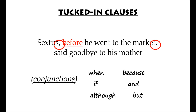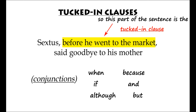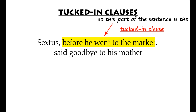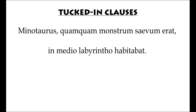This is what you do with the tucked-in clause. They generally have a comma around them, but they might not have, but they always start with a conjunction. A conjunction is a joining word — they join two bits of sentences together, so they join two clauses together, and they're little words like if, and when, and although, and at their simplest, they are just the words and, and but.